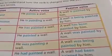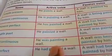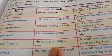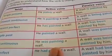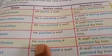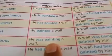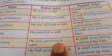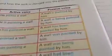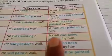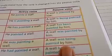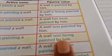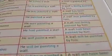For past continuous tense: 'He was painting a wall.' Here 'was' is the helping verb and 'painting' has the '-ing' form. To adjust the '-ing' form, you use 'being,' and the helping verb remains 'was.' So the passive form becomes: 'A wall was being painted by him.'